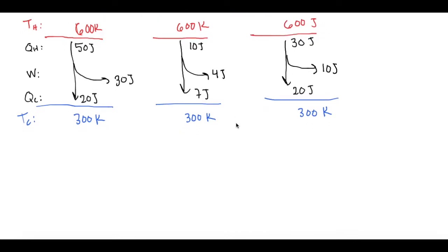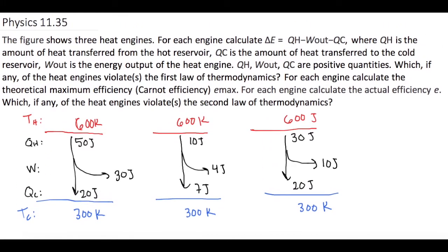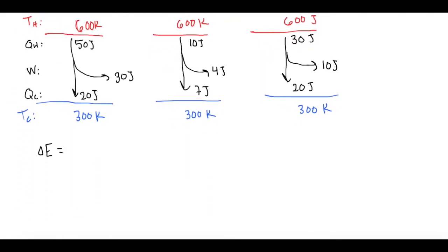So let's go down and do part A. They want us to know what is delta E, and they say it's equal to QH minus work out minus QC.